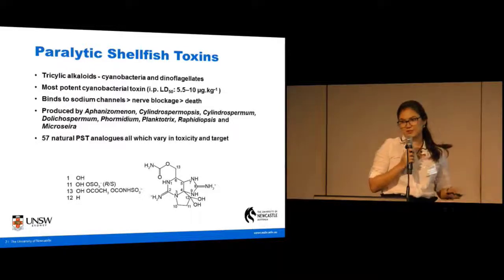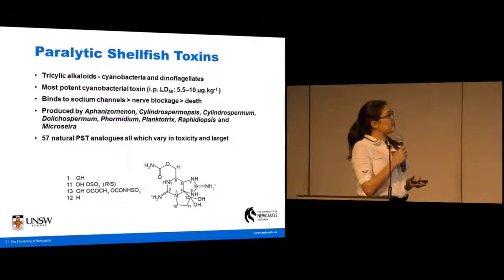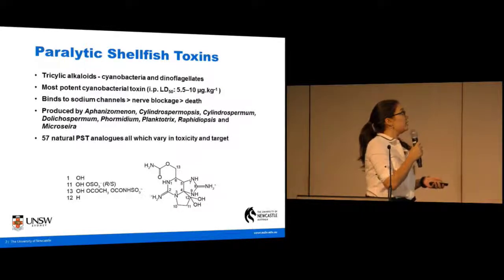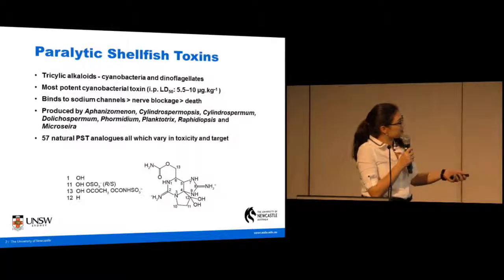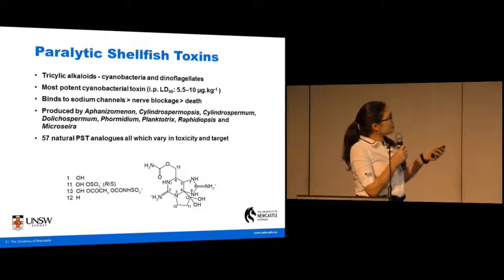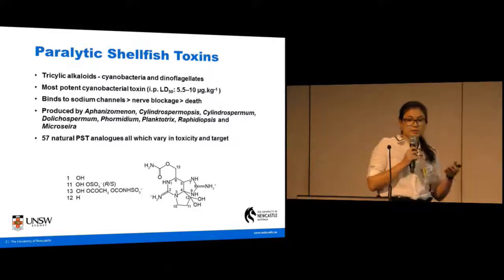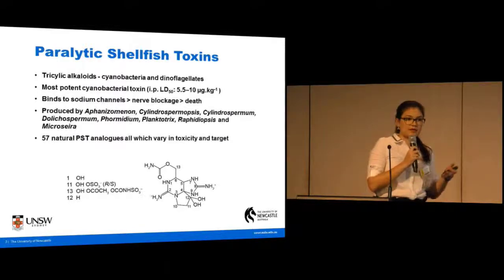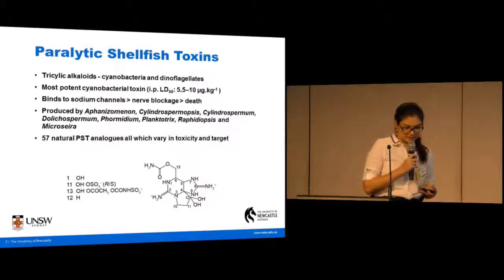Firstly, an introduction to paralytic shellfish toxins. They're a family of toxins produced by cyanobacteria and dinoflagellates, and the main member of this family is saxitoxin. They all share a tricyclic alkaloid structure and they're the most potent form of a class of cyanobacterial toxins. They work by binding to sodium channels in nerves, leading to nerve blockage, paralysis, and then death.